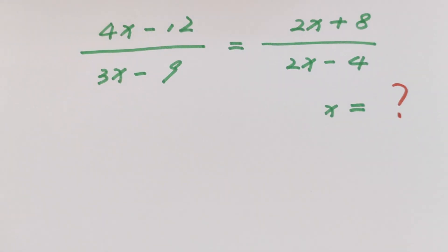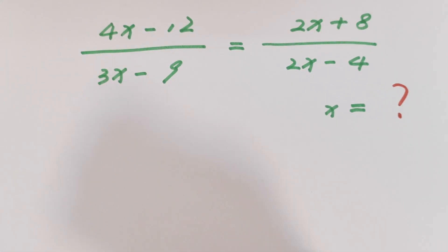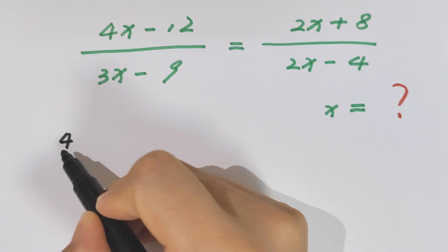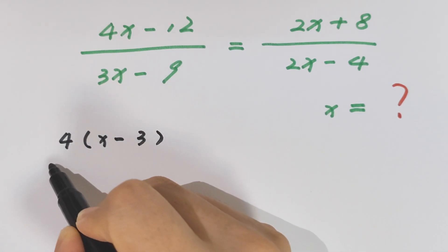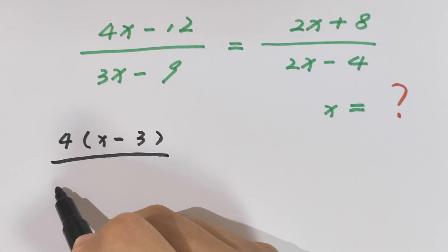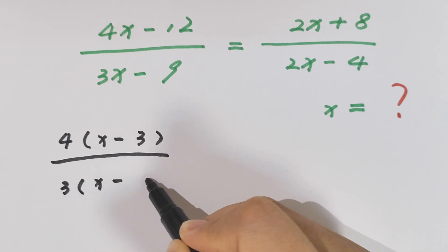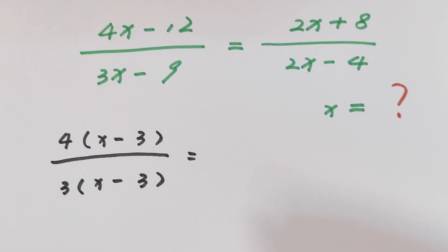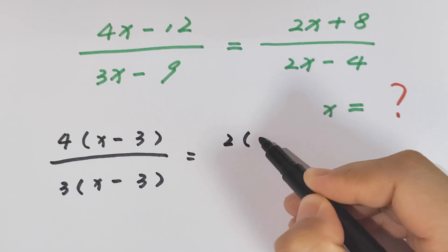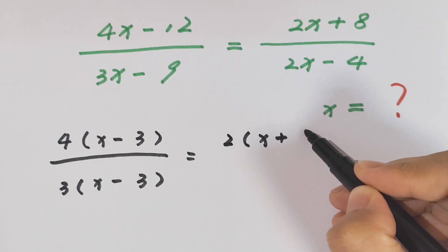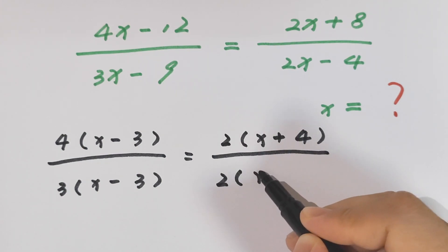To find the value of x, first we can take 4 out of the bracket: 4 bracket x minus 3, divided by — here we take 3 out of the bracket — x minus 3. On the right side, equals 2x plus 8, so we can take 2 out of the bracket: 2 bracket x plus 4 divided by 2 bracket x minus 2.